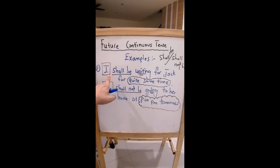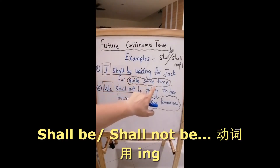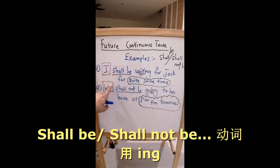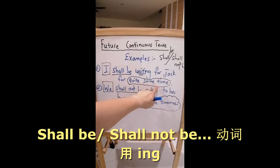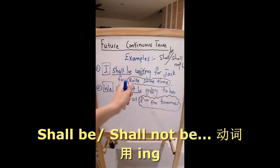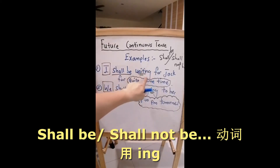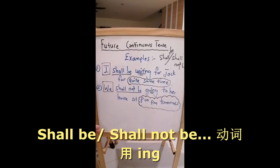Now look at the first example: 'I shall be waiting for Jack for quite some time.' I and we use 'shall be' or 'shall not be'. 我将会花好一些时间来等待 Jack. 'Shall be', 看到吗? 动词呢? 是加 I-N-G. 'For quite some time' is to show a more specific time.